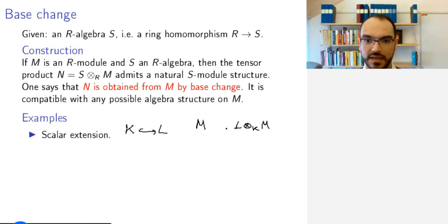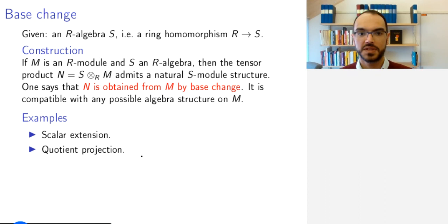I have a map of K-vector spaces, and in general of modules in this construction, sending m to 1 ⊗ m. So this lives inside here somehow.